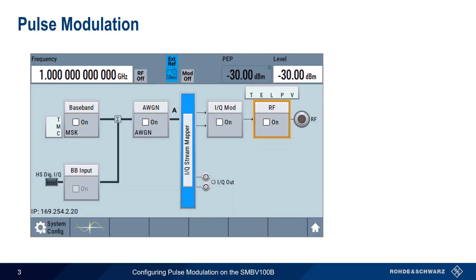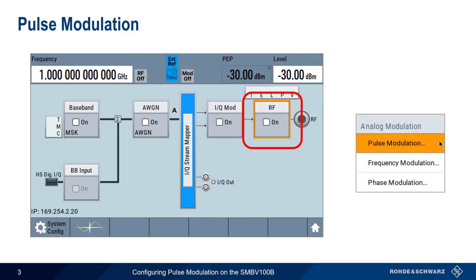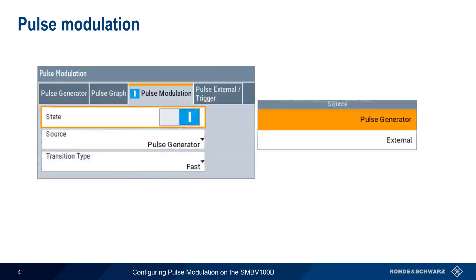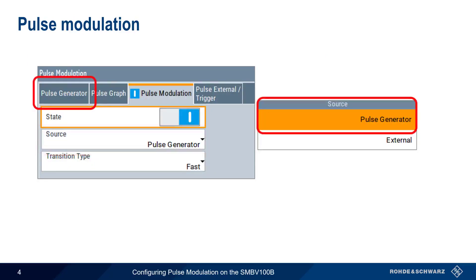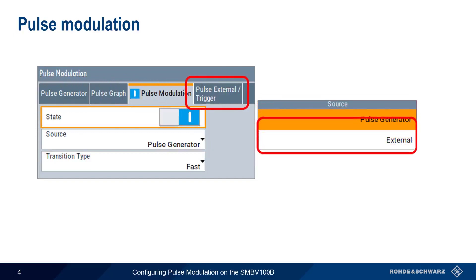On the SMBV, we access Pulse Modulation by selecting the RF block, and then choosing Pulse Modulation from the menu. There are two sources for pulse signals on the SMBV. Pulses can be created by the SMBV's internal pulse generator, or by an external source. The more common case is using the SMBV's internal pulse generator, so we'll start with that.